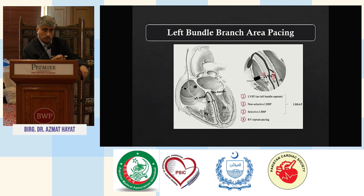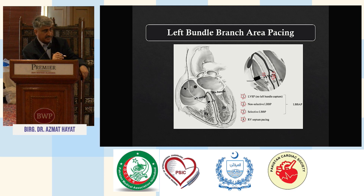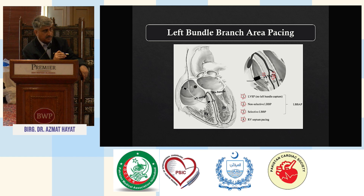The newest of them all is left bundle pacing. With left bundle branch area pacing, we try to fix the lead to capture the left bundle — from the right side. The lead is placed in the RV but at a location where it can catch the left bundle. Four possibilities exist: selectively catch the left bundle (the best), non-selectively catch the left bundle, capture the septum, or a fourth option. In any of these three main outcomes, the end result is still not bad, but ideally catching the left bundle is preferred.